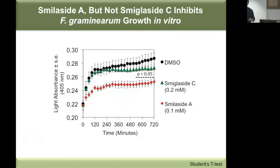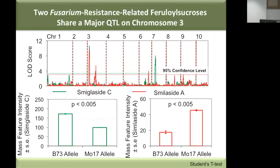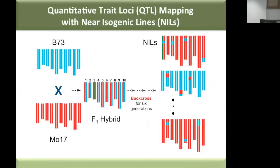We can ask why there is natural variation in these two compounds across our population. Measuring them across the recombinant inbred lines and performing QTL mapping, perhaps not surprisingly, we see a co-localized quantitative trait locus at the beginning of chromosome 3. When we subset the RIL population by different alleles at this locus, lines carrying the B73 allele preferentially accumulate smilacide C — just like parental B73 — and have less smilacide A, showing pretty good segregation.